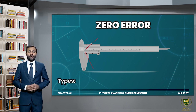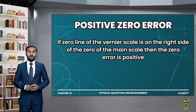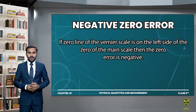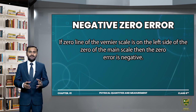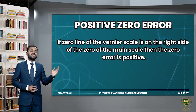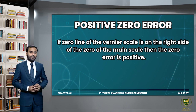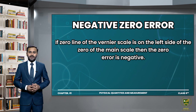There are two types of zero errors. The first one is the positive zero error and the second one is the negative zero error. Positive zero error: if the zero of the Vernier scale is on the right side of the zero of the main scale, then the zero error is positive. If the zero of the Vernier scale is on the left side of the zero of the main scale, then the zero error is negative.